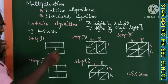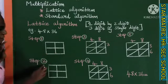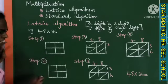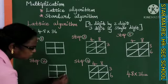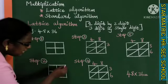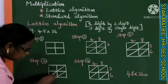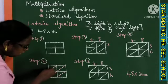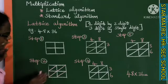One square is divided into four parts. Each small box has a diagonal drawn through it. These two boxes share one diagonal. In total, there are three diagonals. This is step two.